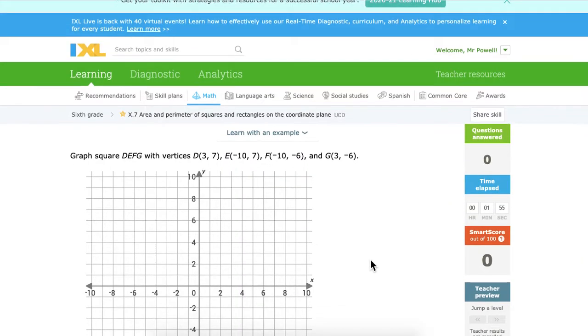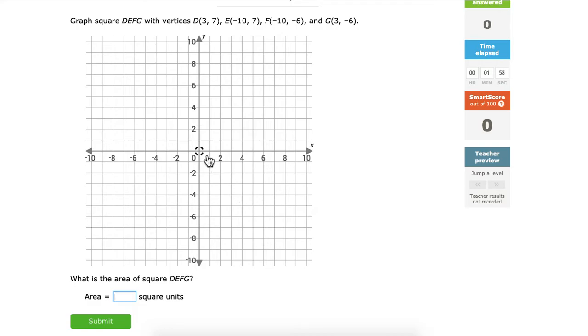Okay, let's go on to this first one. So first thing is you need to plot them. So it says over 3 and up 7. Yep, that's where your first point goes. Then negative 10 and 7. So negative 10 and 7. Then negative 10, negative 6. And then 3 and negative 6. Okay, now this one's a square, isn't it?